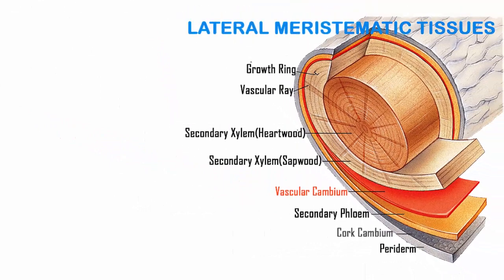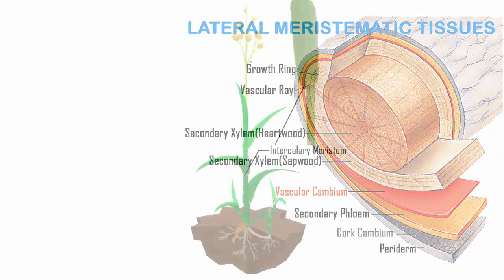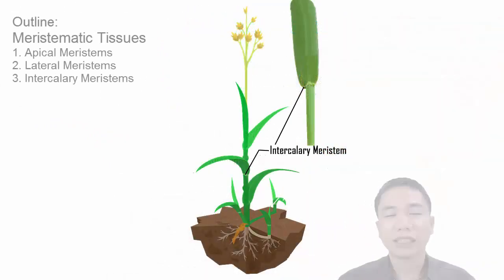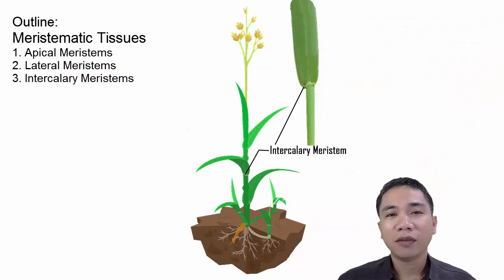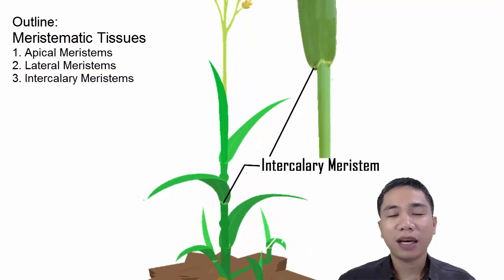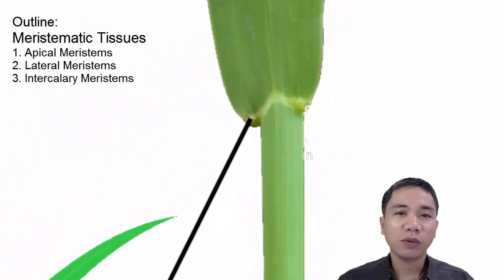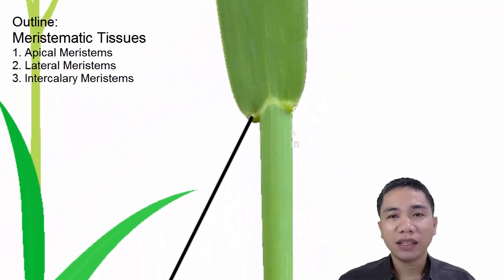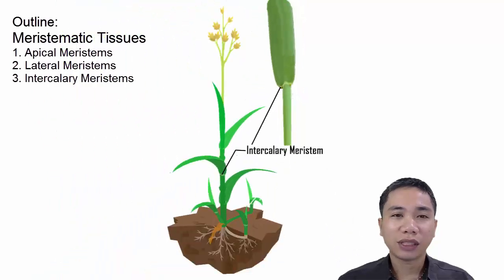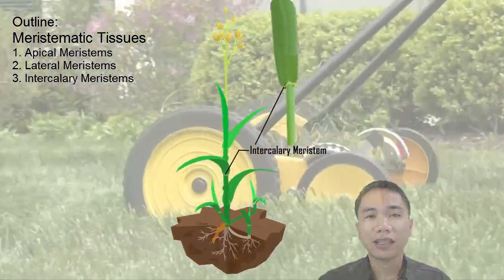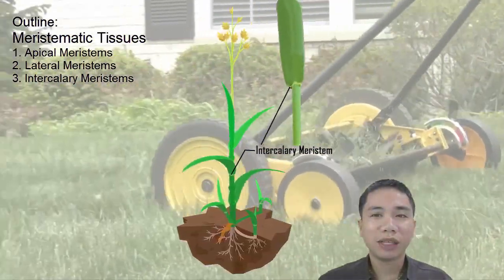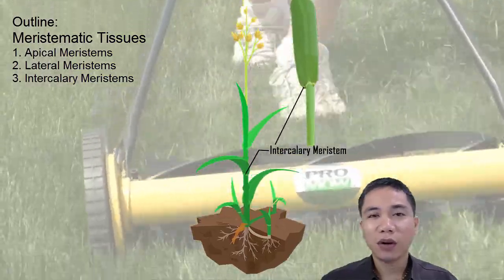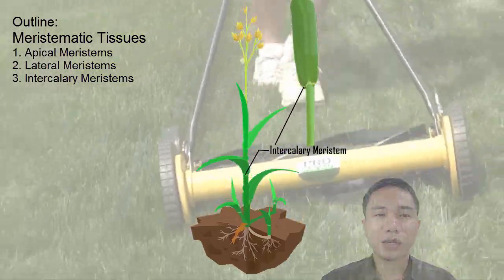Another type of meristematic tissue called intercalary meristem occurs in grasses. It is located beneath the apical meristems in the vicinity of nodes where you can find the leaves. These tissues add to stem length, so every time a grass is cut, it will continue regenerating — which is quite annoying to lawn keepers and farmers.